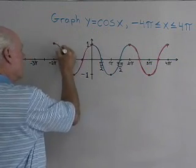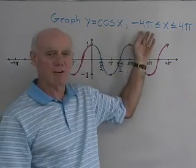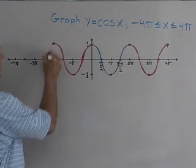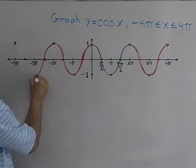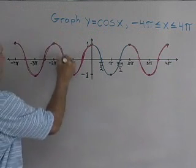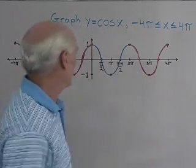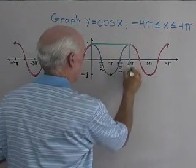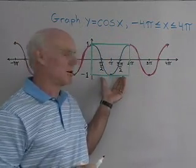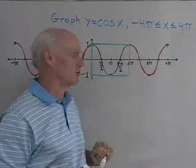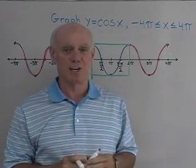So here is the graph between zero and negative two pi. Since I want to go from negative four pi to positive four pi, I need one more cycle — starting at one, down to zero, down to negative one, up to zero, and back up to one. So here are four complete cycles of y equals cosine x. The basic one complete cycle is framed between x equals zero and x equals two pi, and that picture repeats every two pi units because the period of y equals cosine x is two pi.